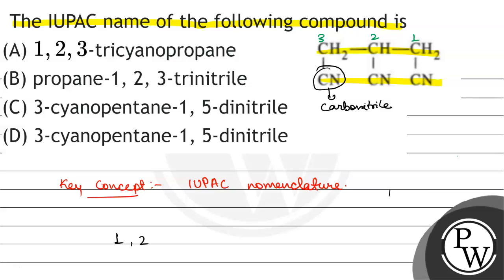IUPAC nomenclature will be 1, 2, 3 tricarbonitrile propane. Or we can say one more thing.